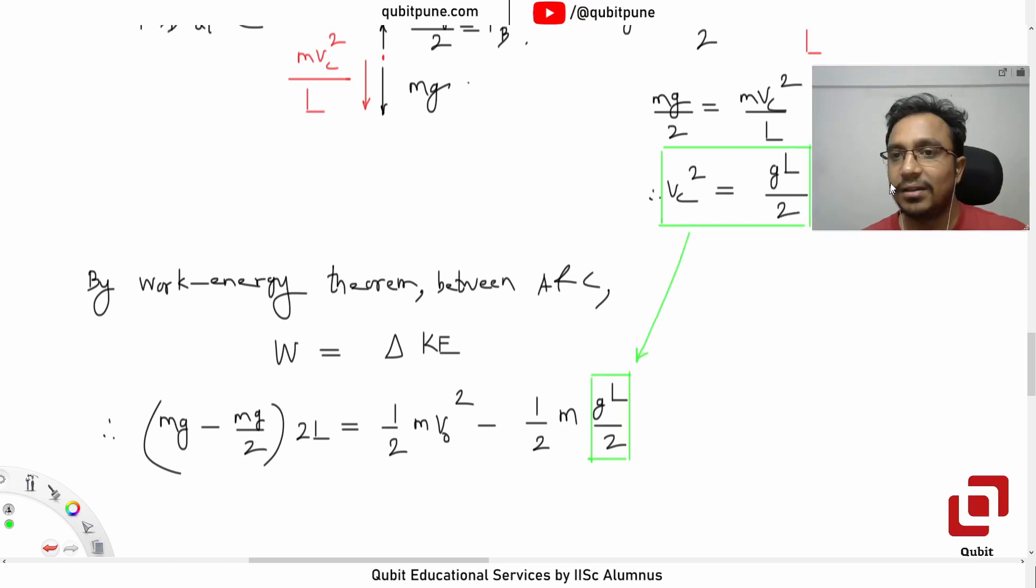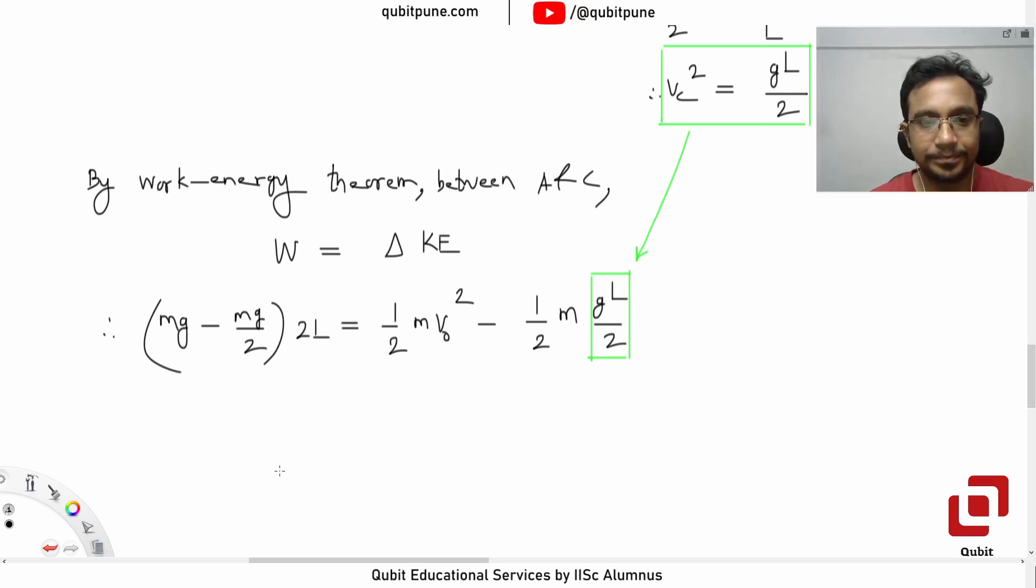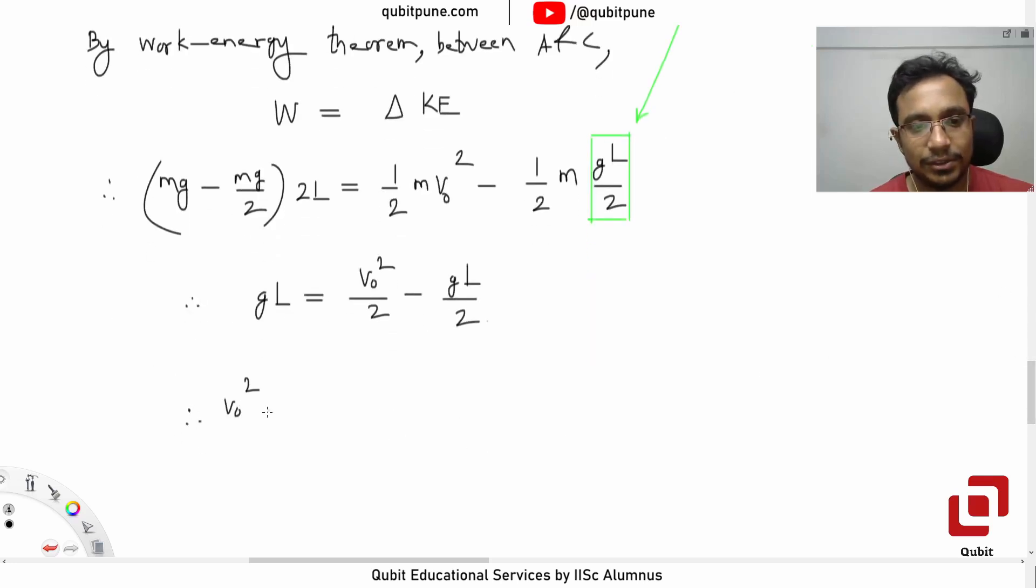Let me know if you understood this. Yes. Is this clear? Yes, sir. Buck up. Now what? I guess now it's very straightforward. M will get cancelled. Let's simplify this a bit. MG by two into 2L, so this will be MGL. I'm not writing M now. So GL is equal to V_0 squared by two minus GL by two.